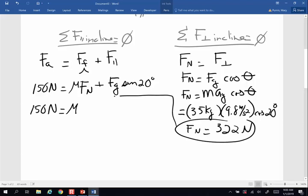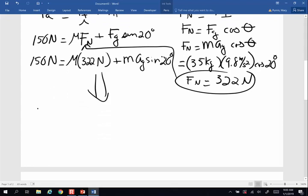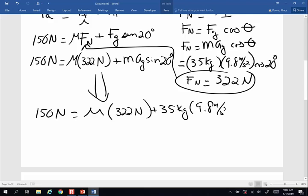Now that I have that, I'm going to take that normal force, plug it in here, mu times 322 newtons, plus force of gravity, mass acceleration of gravity, sine of 20 degrees. And I'm just going to pull all of this down so I have a bit more room to write. 150 newtons equals mu, my unknown, 322 newtons, plus my mass, 35 kilograms, gravity, 9.8 meters per second squared, times the sine of 20 degrees.